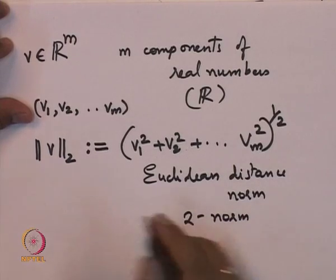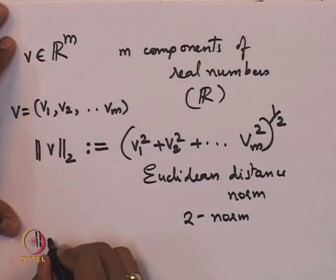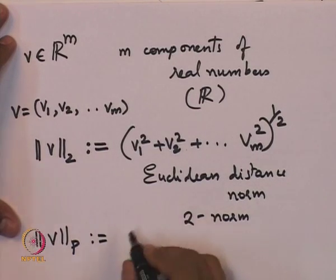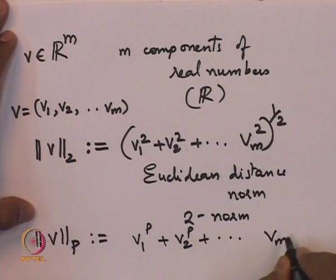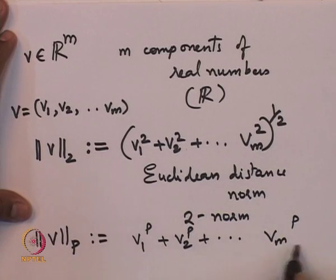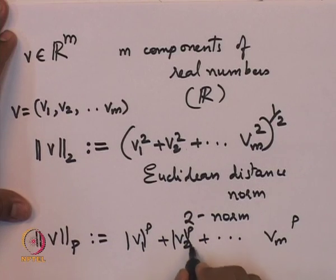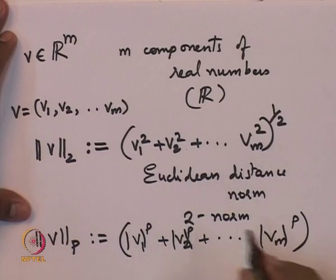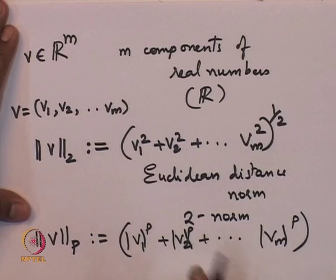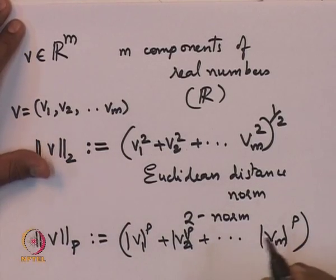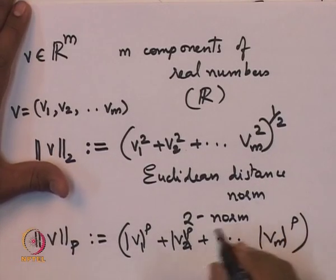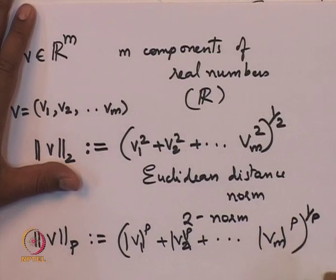For the p-norm one takes the absolute value of each component, raises it to the p-th power, sums them all, and then takes the p-th root. If p is odd, without absolute values the terms may not be positive, so we take absolute values of each component before raising to the p-th power. For any p greater than or equal to 1, this is how the p-th norm of a vector v is defined.